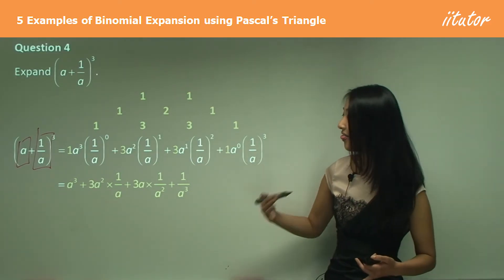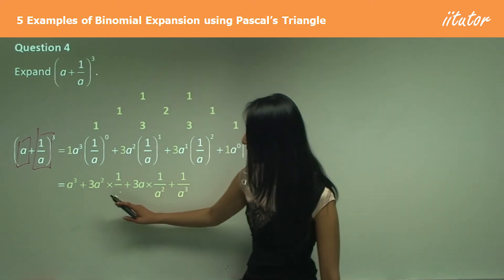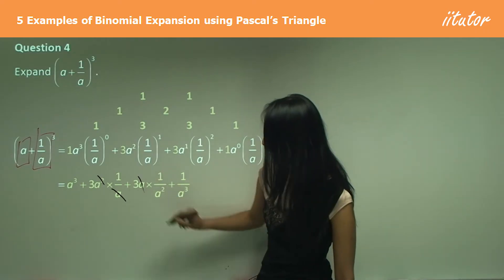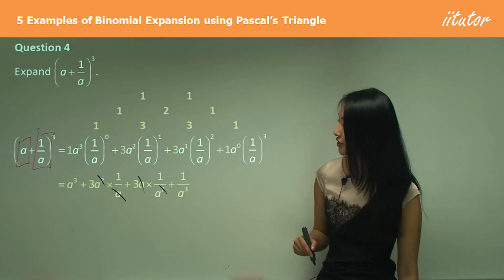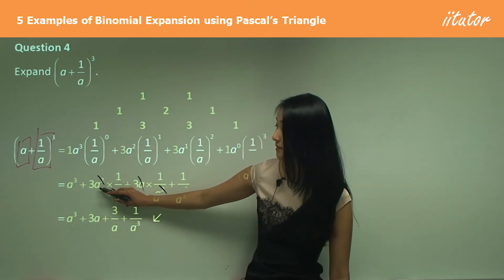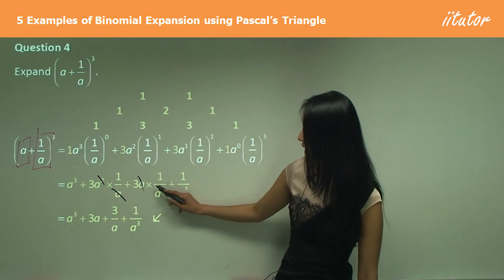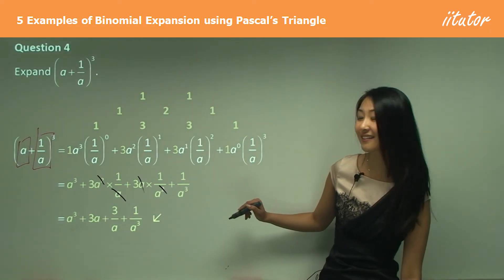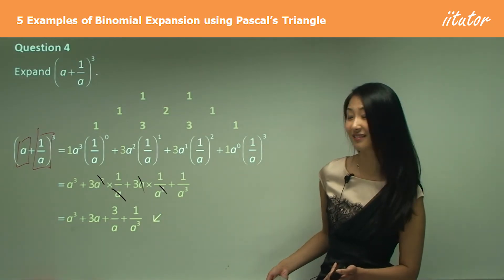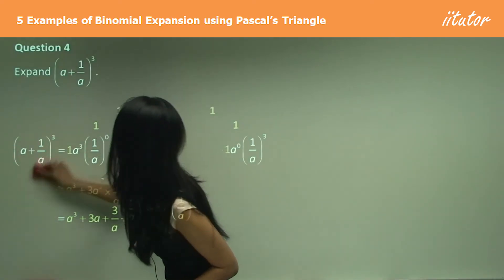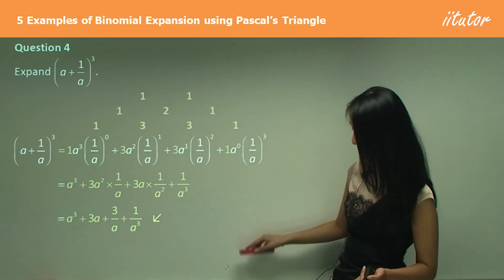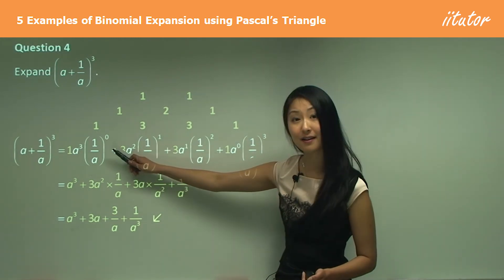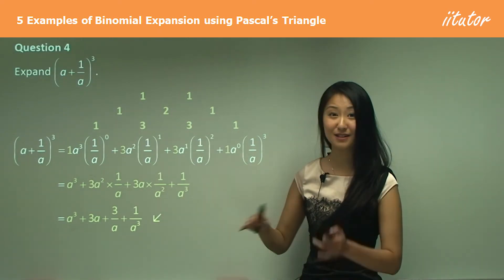Expand the brackets first: (1/a) to the power of zero is just one. Power of one remains 1/a. (1/a) squared becomes 1/a². And a just becomes a³. Then simplify by multiplying together — look for what you can cancel. That a can cancel with one of those a's, and this a can cancel with one of those a's. So finally you get a³, then 3a, then 3/a, then 1/a³. Leave that as your expansion. The mistakes happen in the simplification step, so expand brackets first, then simplify everything later.